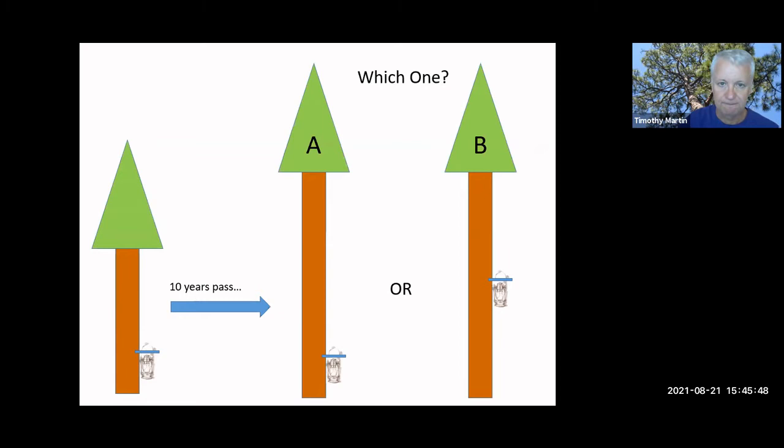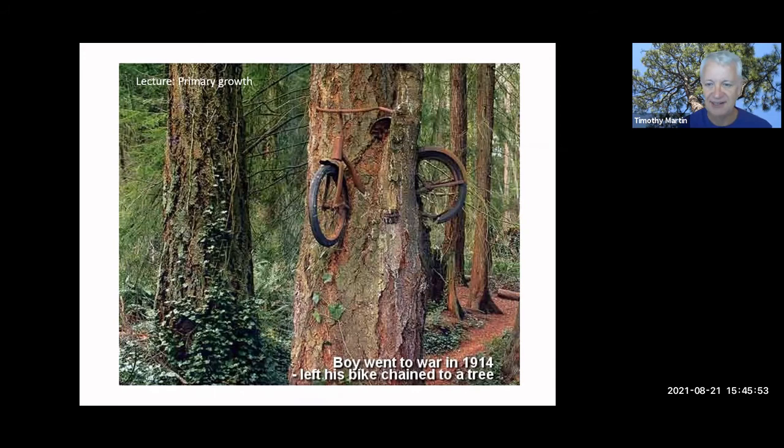Sometimes you'll see pictures like this on the internet. This says a boy went to war in 1914 and left his bike chained to a tree. So they're implying from this photo that they leaned the bike up against the tree. And because they were gone so long, the bike was lifted up as the tree grew. And we just talked about why that isn't the case. This is an interesting photo because that bike is enveloped by that tree. Then what happened was someone sometime back laid that bike into the crook of a branch. And secondary growth, growth in width of the stem and the branch, grew around the bike. But the bike stayed at the same height. So understanding these mechanisms of growth can help us, for instance, interpret situations that we see in the forest, which can be useful sometimes.